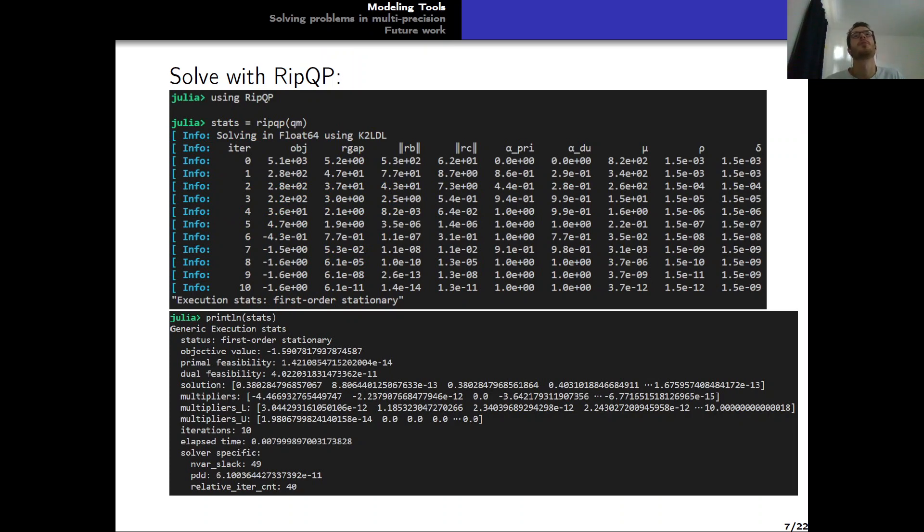First of all, the solve with RipQP is quite easy. You just have to specify the quadratic model to solve if you want to do the most basic operation. And we have some logs such as the objective, the primal-dual gap, primal and dual residuals, and the complementarity measure, for example. And the output is a generic execution stat, which is a structure that is common to most of the solvers of JuliaSmoothOptimizers because it allows to be more generic when solving different problems. And we have some interesting measures like time, iteration, etc.